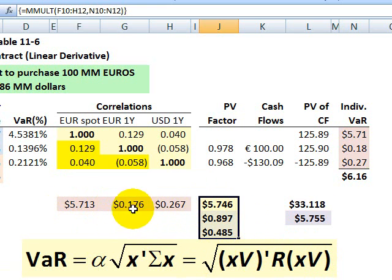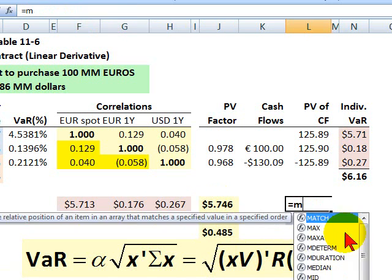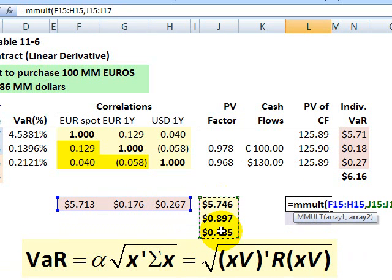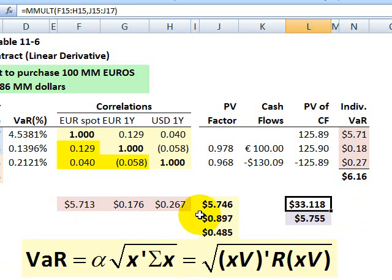Now I pre-multiply the transposed vector of individual VaRs right here in light red or pink. I'm multiplying this by this, which is the same as multiplying this by this, and I've already done that right here. But just to show you MMULT, I multiply the transposed column vector of individual VaRs by the product I've already calculated here. That's my so-called pre-multiply. I hit Enter, and inside the square root I have the dollar variance.